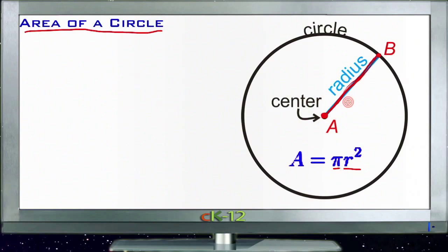So for example, if our circle here has a radius of, say, two inches, then we would say two inches squared times pi equals the area of the circle. Well, two inches times two inches is four inches squared.